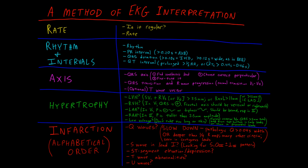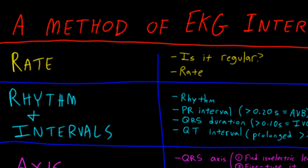So this is the method I use. It's adapted from Dale Dubin. And you can see the general categories of steps that I go through. First, I look at the tracing and I ask myself, does it look regular? And then I figure out the rate and the rhythm.